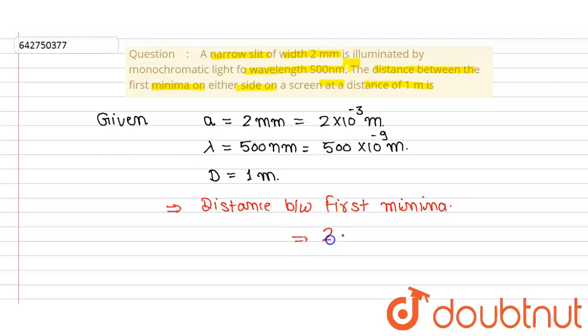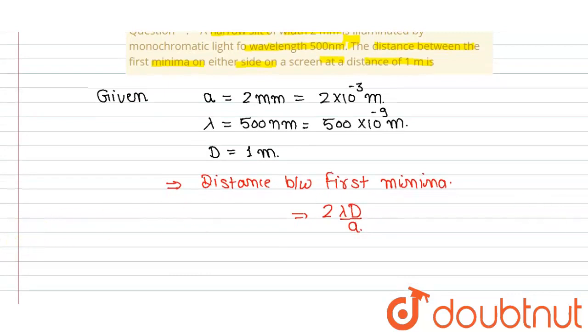Now we are putting that values. So 2 multiply, what is the wavelength? That is 500 multiply by 10 to the power minus 9. What is the value of capital D? That is 1. And what is the value of small a? That is 2 multiply by 10 to the power minus 3. 2 and 2 becomes cancel out.